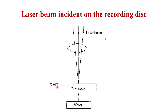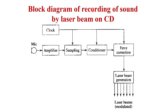The laser beam is incident on the recording disc. This is not the final disc — you are going to regenerate many discs out of this resist master disc. The recording of sound by laser beam on the CD is governed by a clock, because the data is digital and all blocks must be synchronized. The clock governs sampling, conditioning, and error correction. The input is given to the microphone, then the amplifier samples it, conditions it, error correction is applied, and it is given to the laser beam generator, which produces a modulated laser beam as per the digital data.